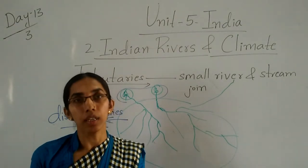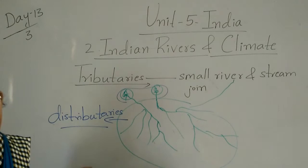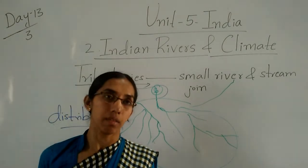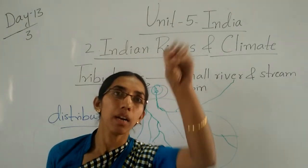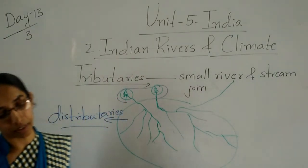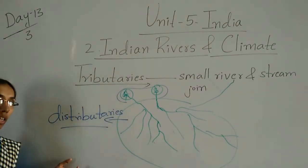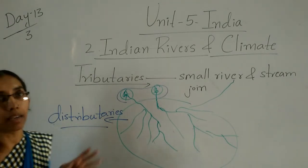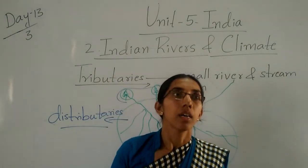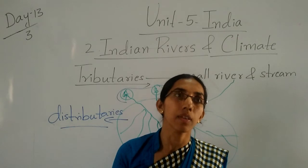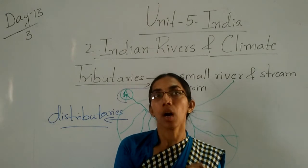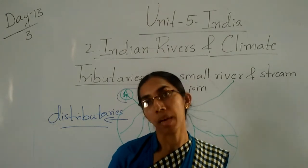The land area drained by a river and its tributaries forms a river basin. On the basis of this, rivers are divided into two parts: first is the perennial river and the other is the non-perennial river.